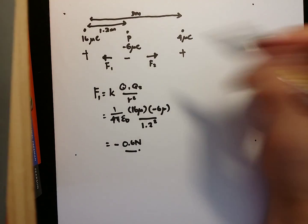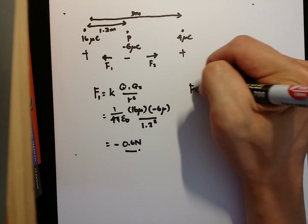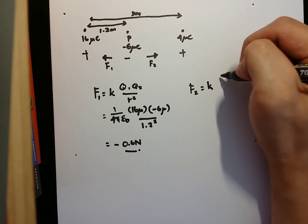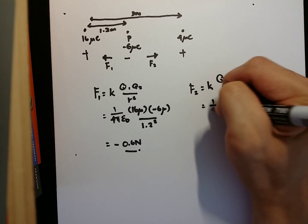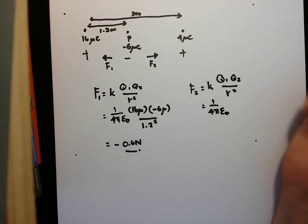Now, next, in order to find F2, we will use back the same formula, which goes k, Q1, Q2, over r squared, 1 over 4π epsilon naught.